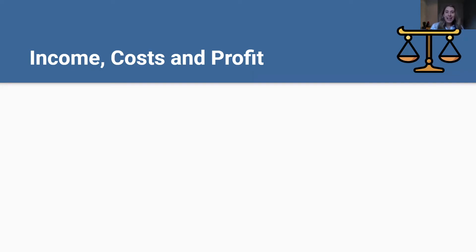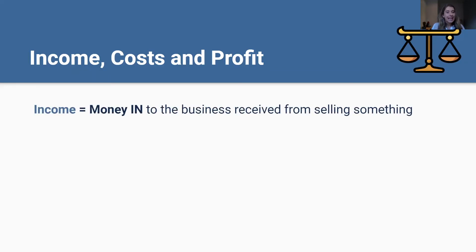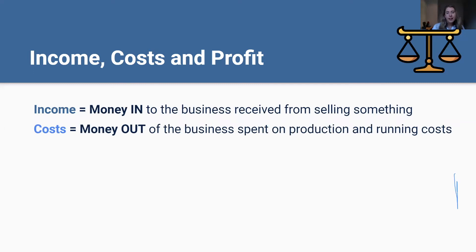You can think of your business finances as a balancing act. Income is simply the money that comes into your business, which you receive from selling your product or service. On the other hand, costs are the money that goes out of your business — the money you spend on producing your product or service and running your business. For example, if you're running a tailoring business, your income would be the money you make from selling the clothes you make, and your costs would be the money you spend on cloth, thread, scissors, wages if you employ staff, or rent and electricity.